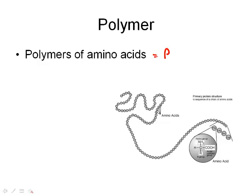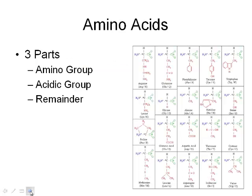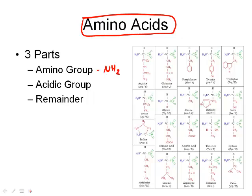A protein is a polymer of amino acids — one amino acid joins together with another, and then it folds to create a protein. So what is an amino acid? It's what makes up these proteins, and it has three parts: an amino group (the NH2 part), an acidic group (the COOH part), and then there's the remainder, which is the R group.